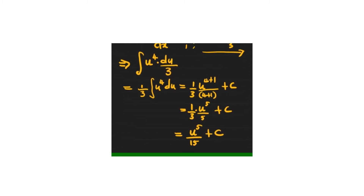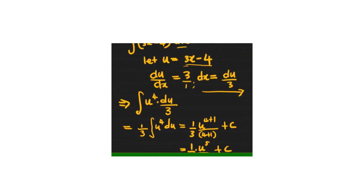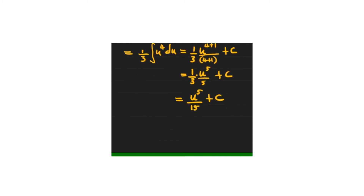Going back, we let u equals 3x − 4, so wherever there is u we now replace it with the original expression. The final answer is (3x − 4) to the power of 5 divided by 15 plus C, our constant of integration.